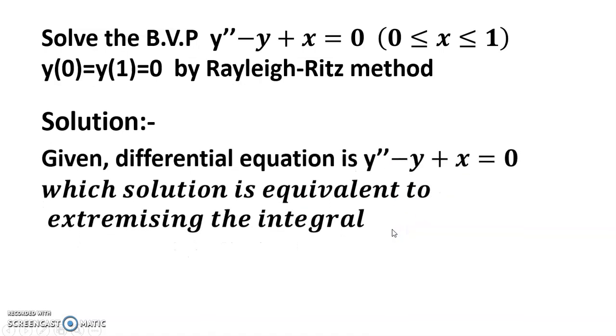Given differential equation y double dash minus y plus x equals to zero, which solution is equivalent to extremizing the integral I equals to zero to one F(x, y, y dash) dx.